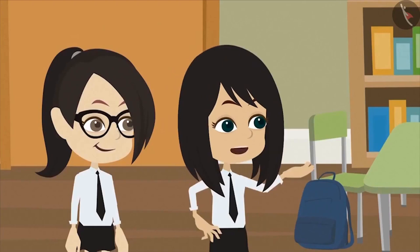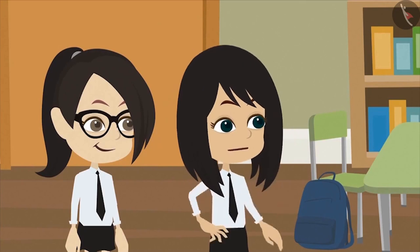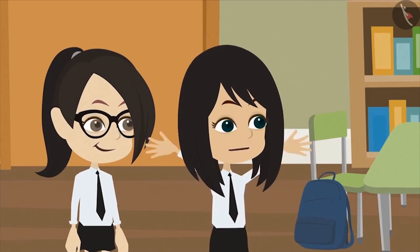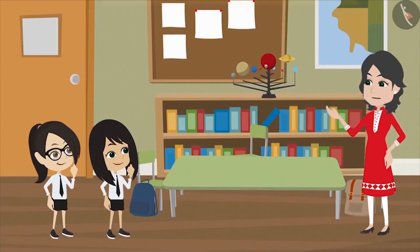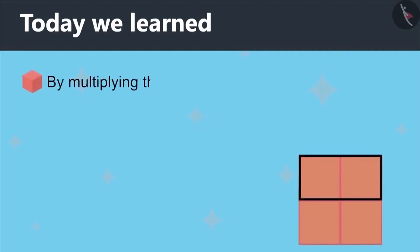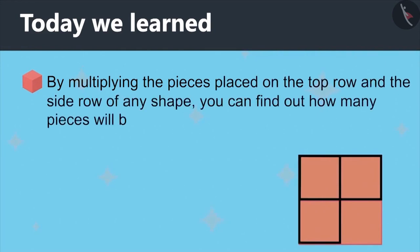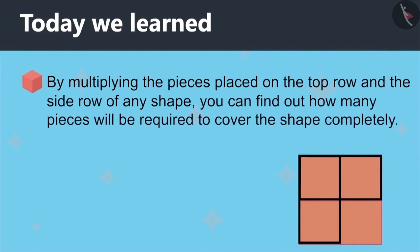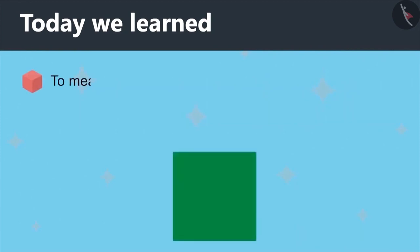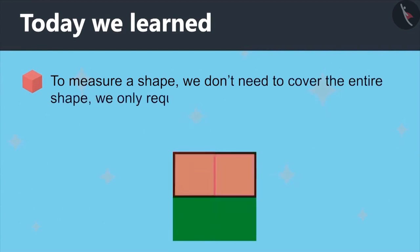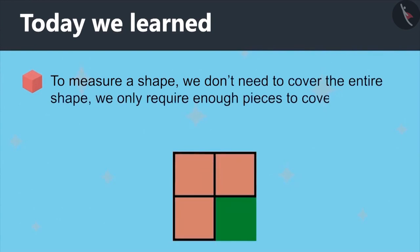Wow, this method is very good. In this way, if we know the number of pieces used in the top row and the side row, we can find out the total pieces required. That is why you don't need more pieces for this. Today we learned that by multiplying the pieces placed on the top row and the side row of any shape, you can find out how many pieces will be required to cover the shape completely. To measure a shape, we don't need to cover the entire shape. We only require enough pieces to cover the top and side edges.